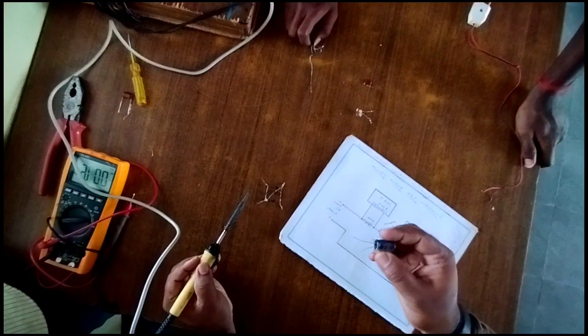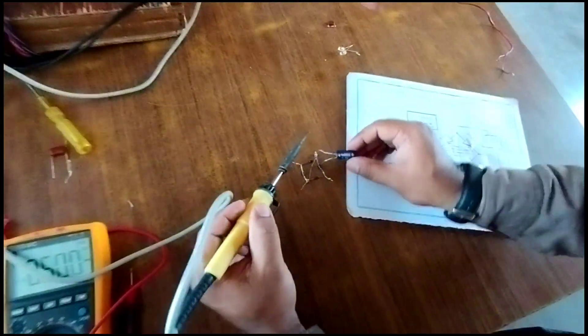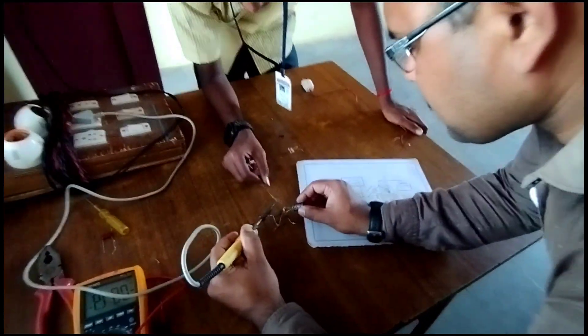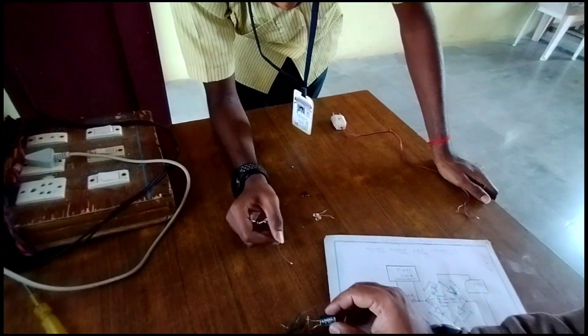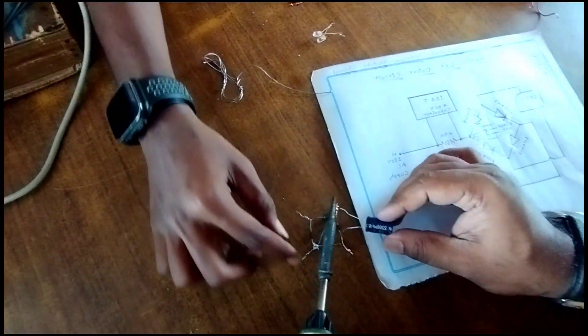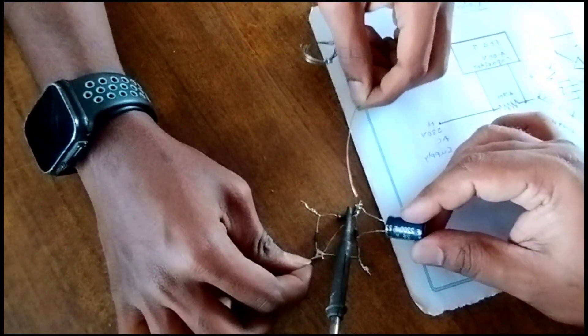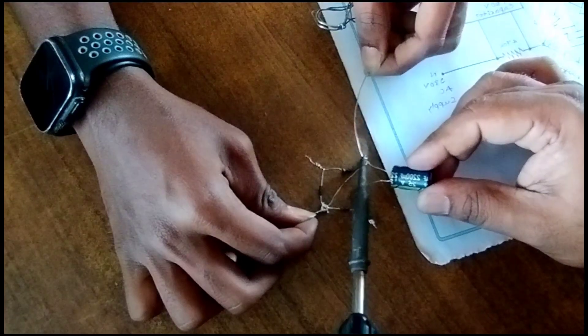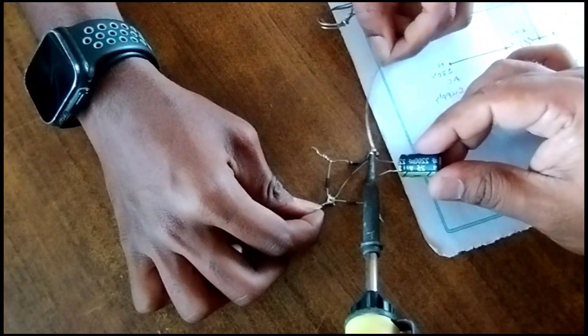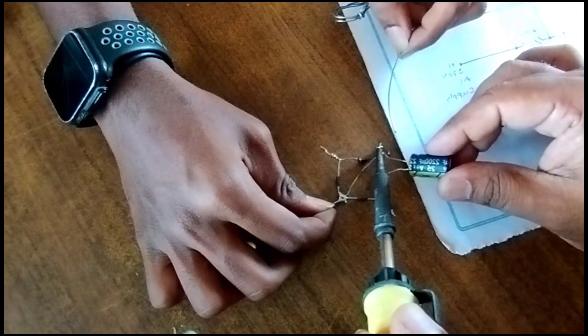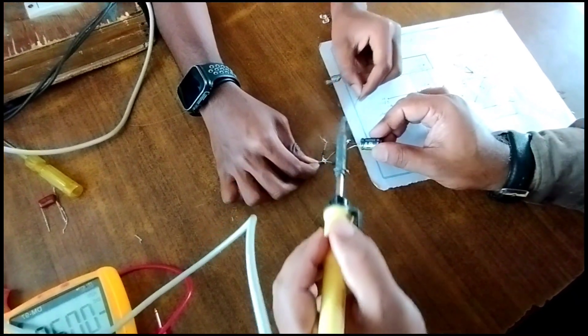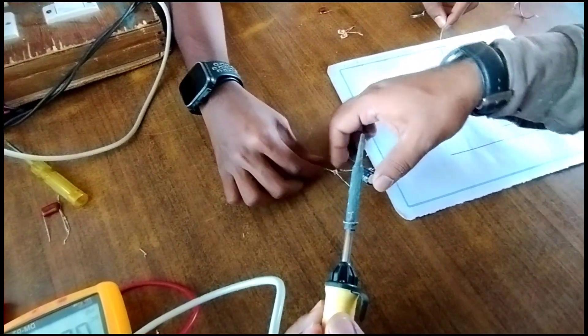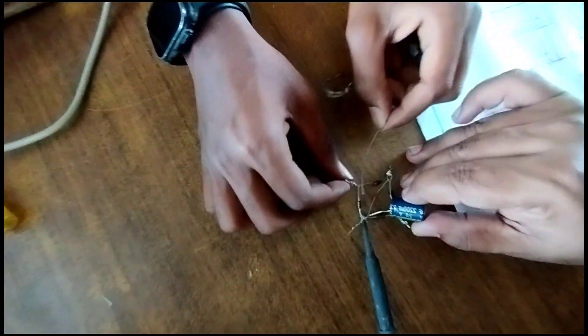Next we take the capacitor 2200 microfarad 25 volt. Okay, this is the negative and this is the positive side. Positive is given to positive of the diodes. Next negative is given to negative of the zener diode and bridge rectifier negative.